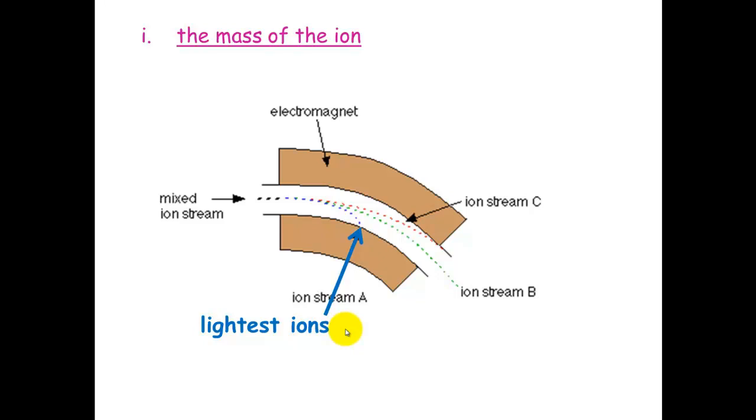Because they're lighter, they weigh less, they have less mass. Whereas ion C are the heaviest ions. These ones will not deflect as much. You need more energy to deflect those.